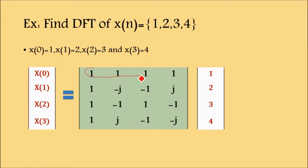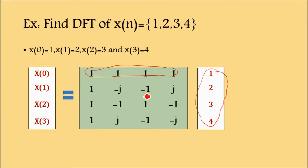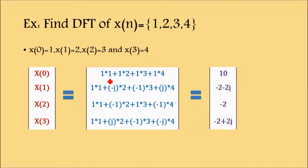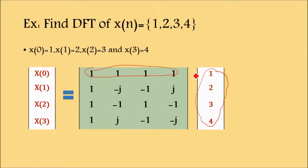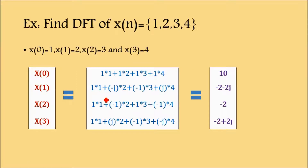For matrix multiplication, each row of the first matrix is multiplied with the column of the second matrix — first element with first, second with second, third with third, fourth with fourth — and then added. For the first row: 1×1 + 1×2 + 1×3 + 1×4 = 1+2+3+4 = 10. So X[0] = 10.